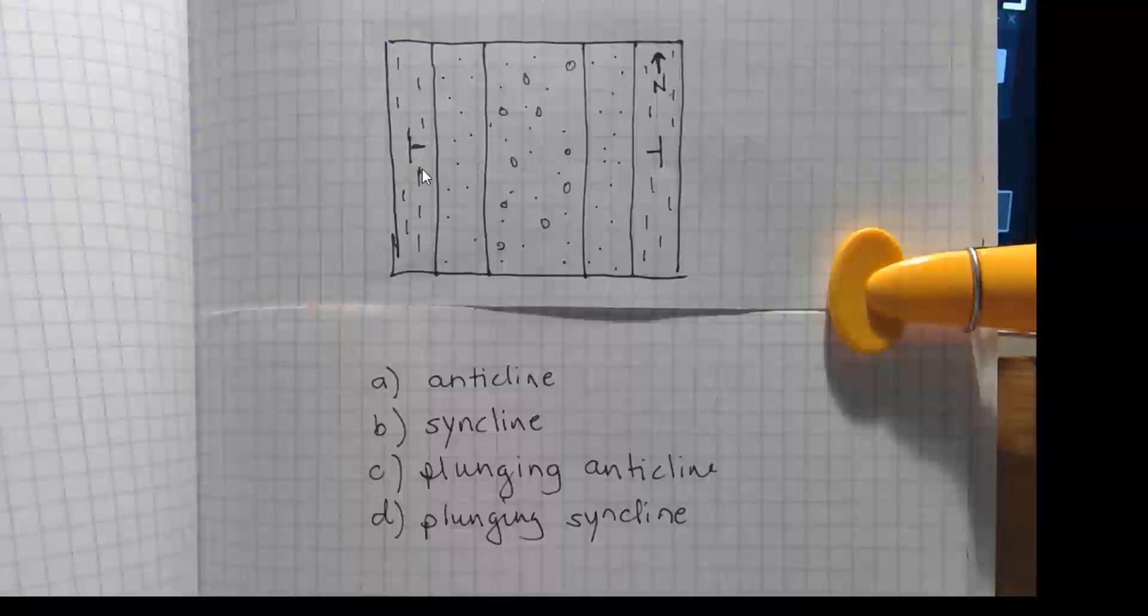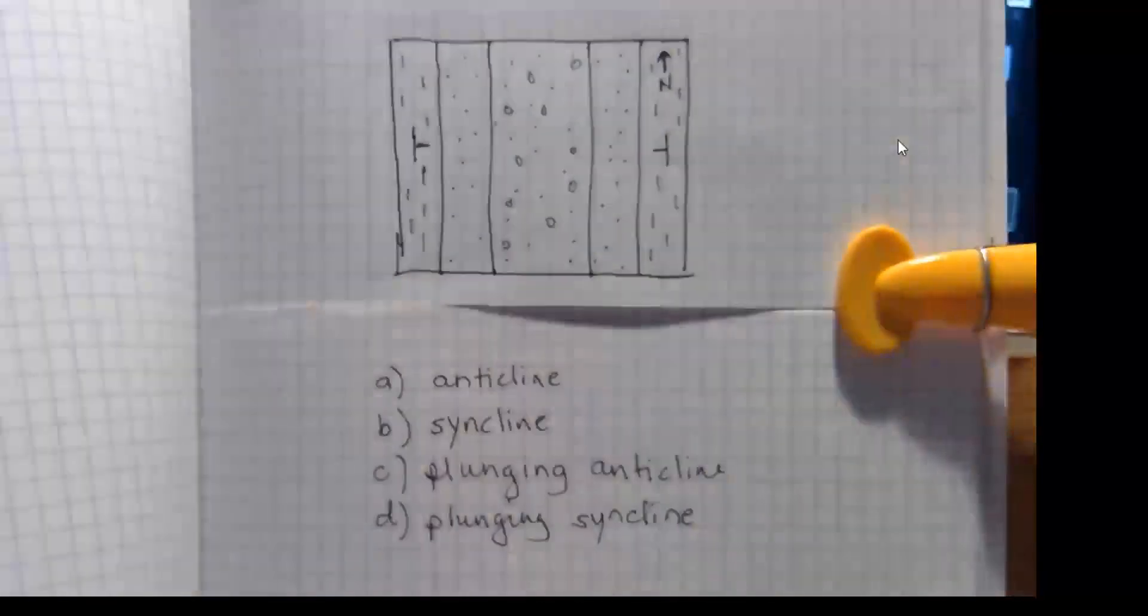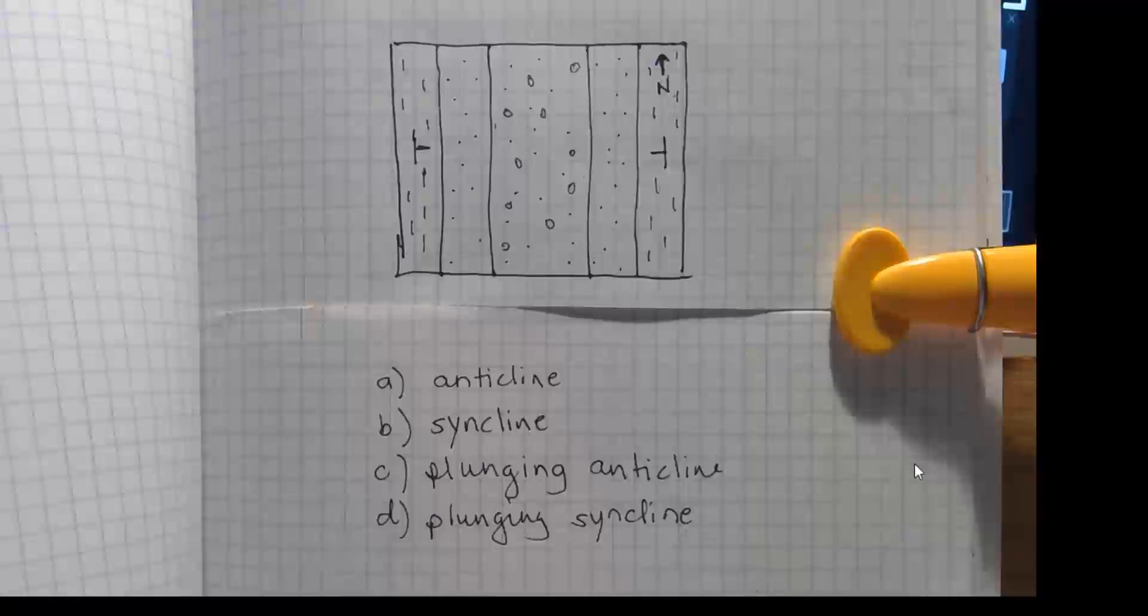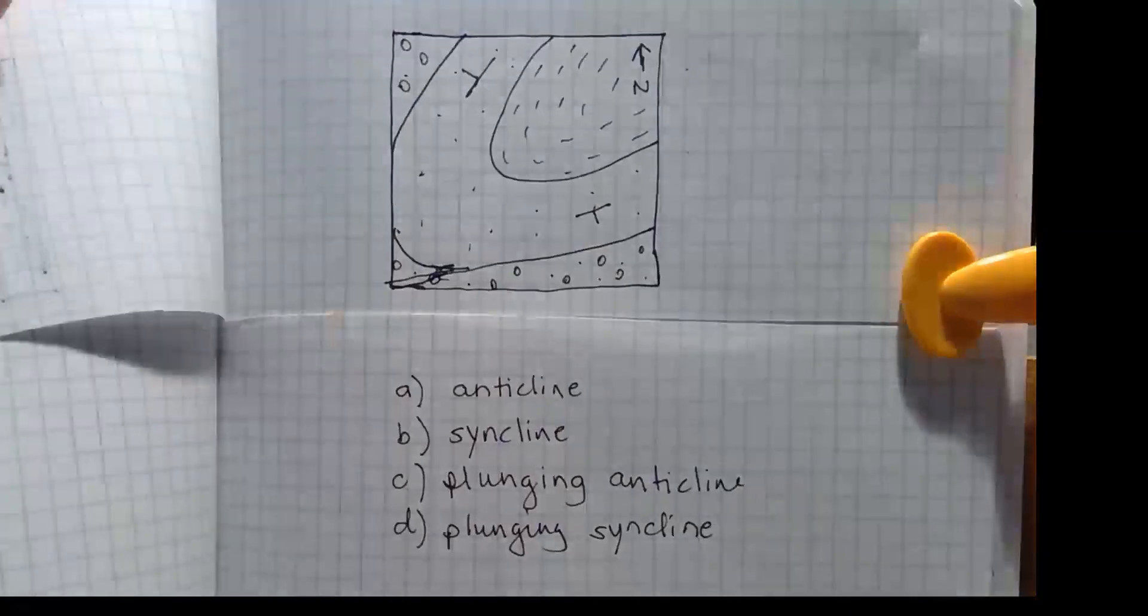Use the strike and dip symbols. Those strike and dip symbols are showing that either side or limb of the fold is dipping toward the center. And what kind of structure does that? Something like this. This dips toward the center. That would be a syncline. Don't say plunging syncline because our outcrop patterns are parallel bands.